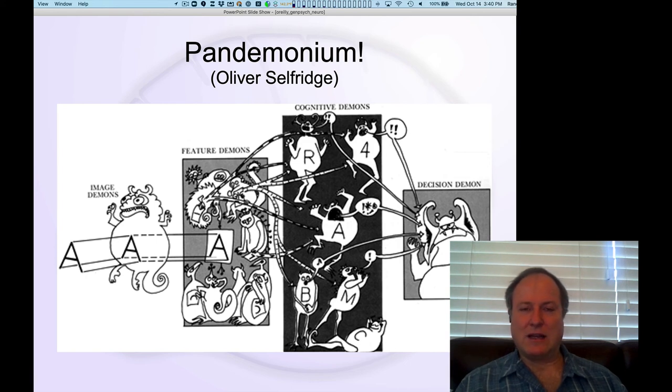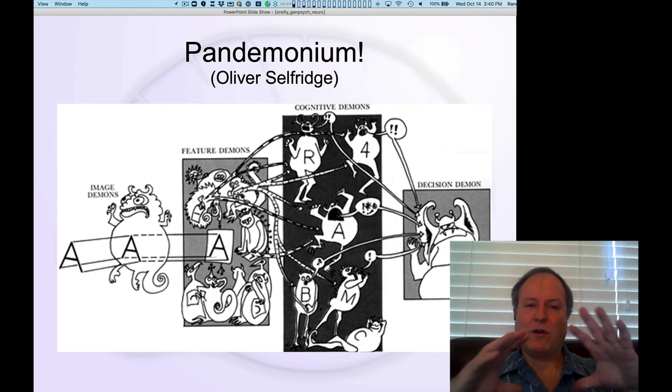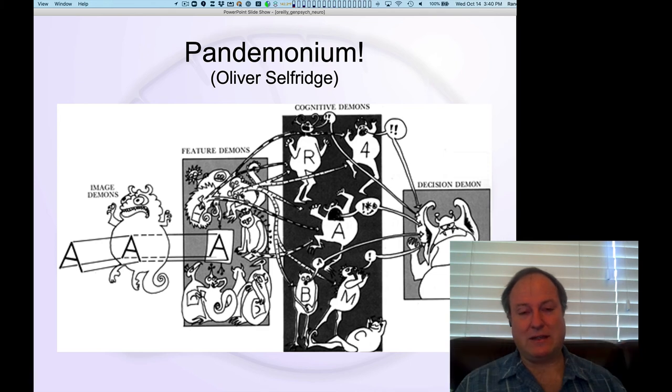And so this is really the kind of key idea about how neurons work is they take overall very complex problems, recognizing faces, for example, and break it down into little tiny steps where each step is a kind of micro detection. And so in the case of the feature demons, they're kind of saying, I sort of recognize a diagonal line going up or a horizontal line going across for this A. And so each individual feature demon is kind of encoding a single feature.